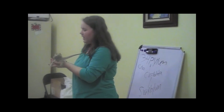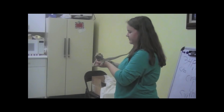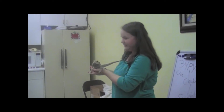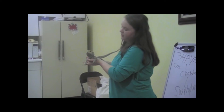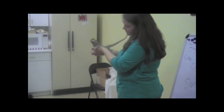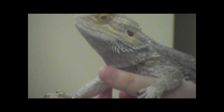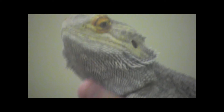He eats crickets, grasshoppers, and other things — he doesn't eat fingers. He is called a bearded dragon because he has a frill right here, and if he gets scared or feels threatened, he will blow up the frill and it will stick out.